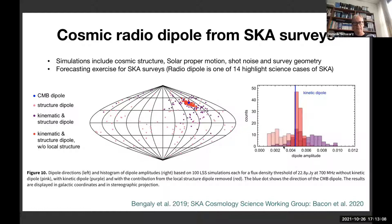From a forecasting exercise for Square Kilometre Array surveys: a simulated structure dipole can point anywhere on the sky (pink dots), the CMB dipole is the blue dot, and combining structure dipole plus kinematic effect gives scatter (purple points). Even in the standard story, you don't expect to exactly recover the CMB dipole in this two-dimensional projection.